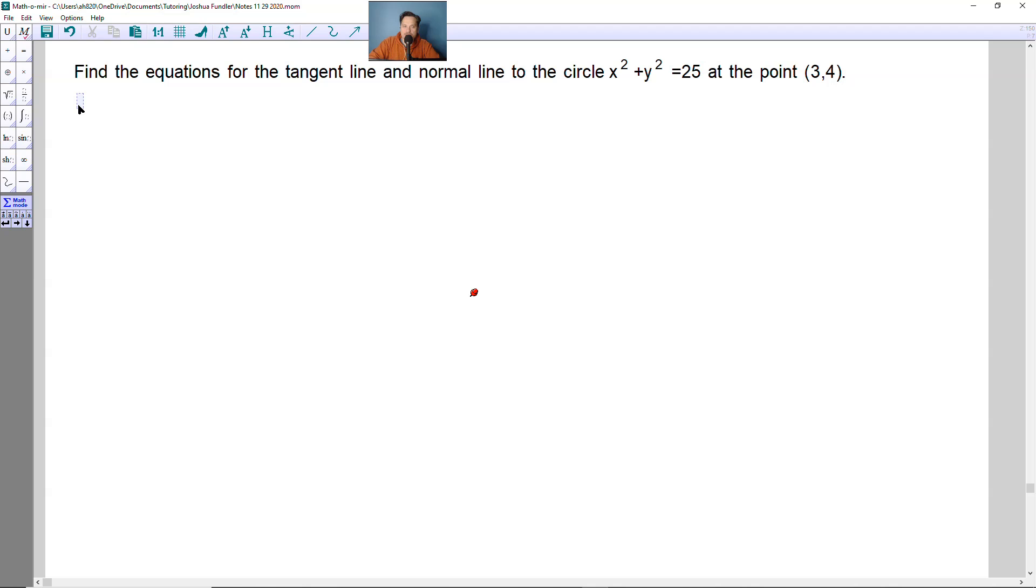Welcome friends, in this one, let's take a look at finding the following. Find the equations for the tangent line and normal line to the circle x squared plus y squared equals 25 at the point (3,4).